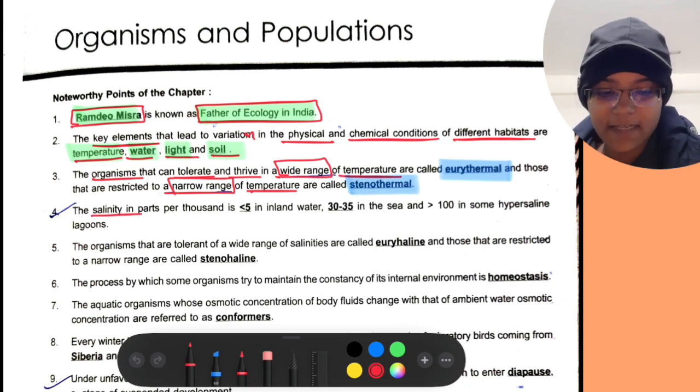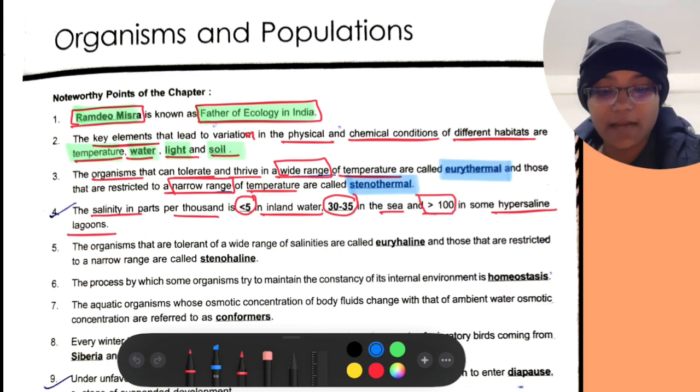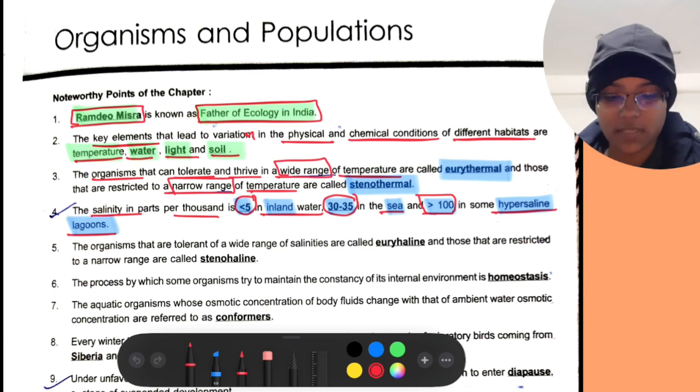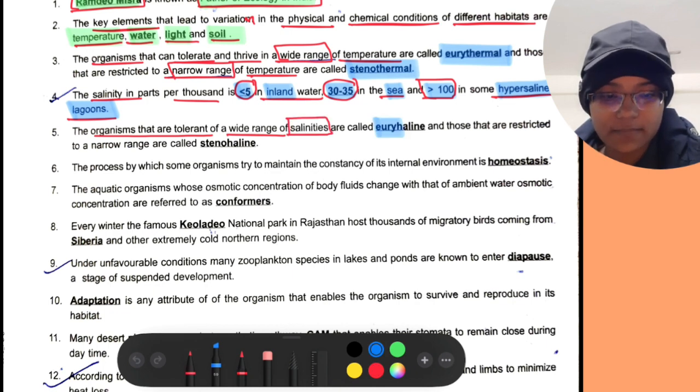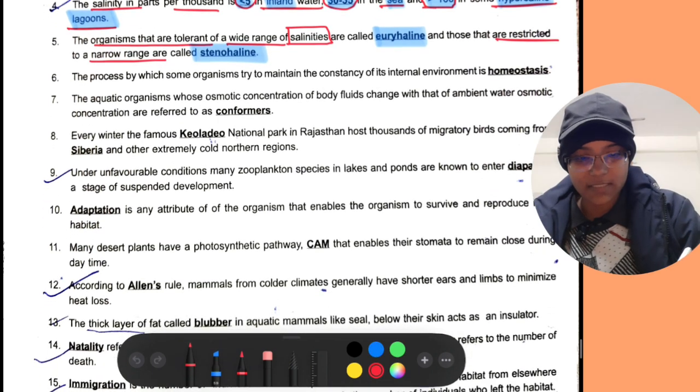The salinity in parts per thousand is less than 5 in inland water, 30 to 35 in sea and greater than 100 in some hypersaline lagoons. The organisms that can tolerate a wide range of salinities are called euryhaline and those that are restricted to narrow range are called stenohaline.